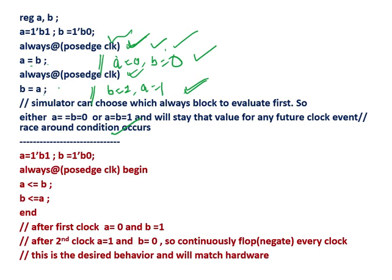To avoid the race around condition, inside the always block we normally use non-blocking assignment instead of blocking assignment. Consider the same example: a = 1, b = 0, always @(posedge clock) with non-blocking assignments a <= b and b <= a. When the positive edge arrives, both statements run in parallel. So a gets b's old value (zero) and b gets a's old value (one), giving a = 0 and b = 1.